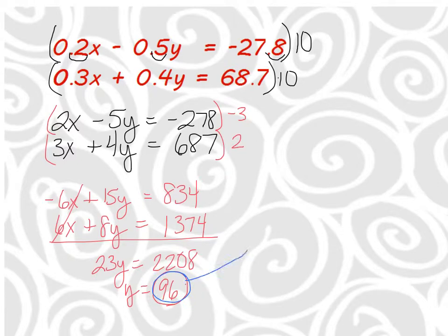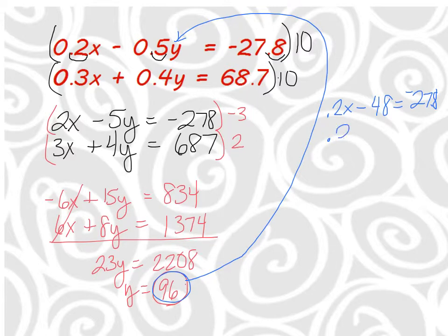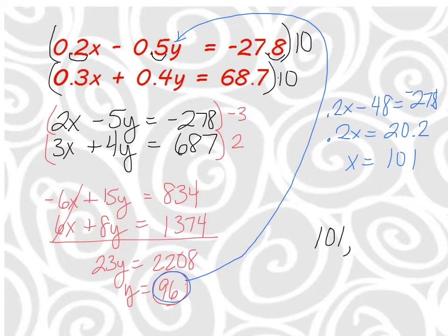I'll plug y = 96 into the very top original equation. I end up with 0.2x, then subtract 0.5 times 96, which is 48, and that equals negative 27.8. Adding 48 to both sides gives 0.2x equals 20.2. Divide both sides by 0.2 and you get x equals 101. So the solution to the system is (101, 96).